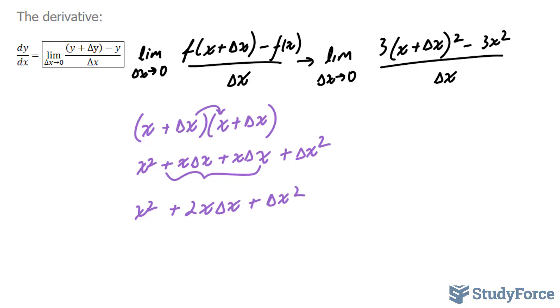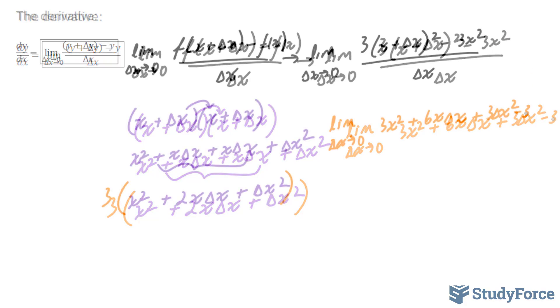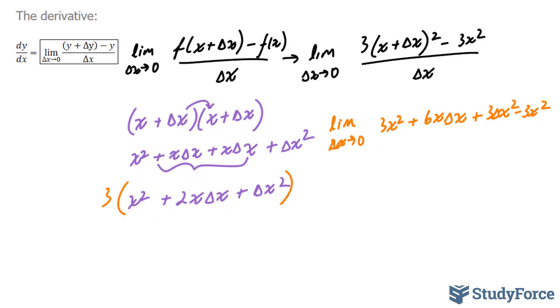Don't forget this 3. You need to multiply these three terms by 3 and you should end up with the following expression. The limit as delta x approaches 0 is 3x squared plus 6x delta x plus 3 delta x squared minus 3x squared over the same denominator.